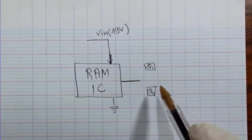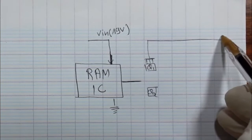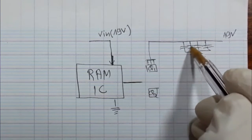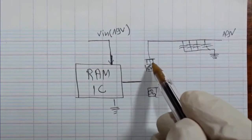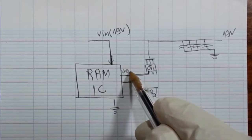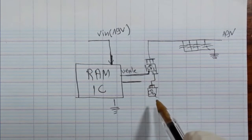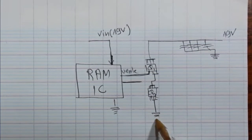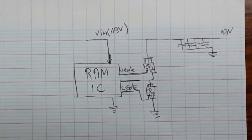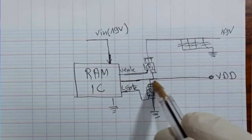On this side we have MOSFETs — Q1 and Q2. This is the drain for this MOSFET, going to another 19 volt. Here we have capacitors — PF capacitors. Here we have the source and gate. This is the gate, this is the drain of this MOSFET, and this is the source. The source will be connected to ground and the gate will be connected to the IC — this is the lower gate.